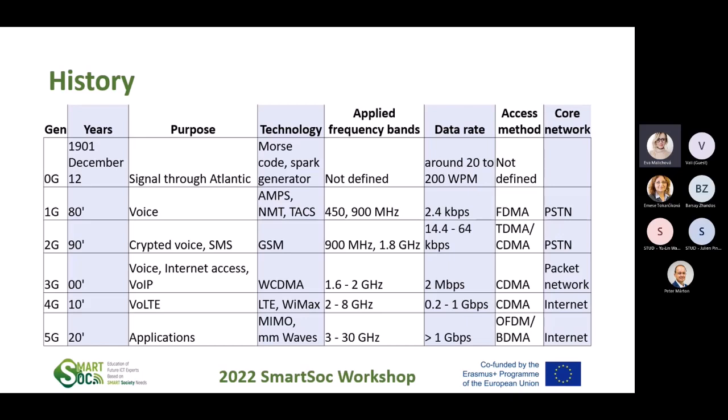As you can see in the history, there is of course development from the end of the 19th century. At the end of the 19th century, they started to use electromagnetic waves for communication — only spark-generated signals with Morse code. Everybody knows what Morse code is from Western movies or war movies. With an experienced and fast technician at the spark generator, one could send 200 words per minute over the distance from the East Coast to the West Coast of the American continent.